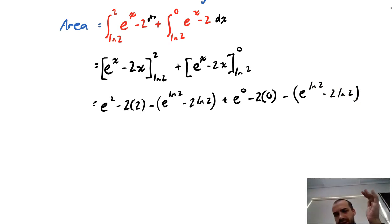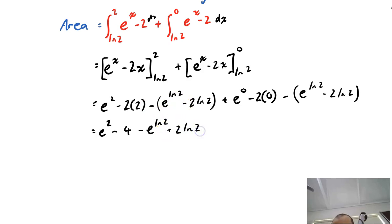Alright, now you could have done this with absolute values, but if you'd done that, you'd miss out on some opportunities to do some cancelling, which is really the key option here. So let's take a look at what we have. e to the 2 minus 4 minus e to the ln2 plus 2 ln2 plus e to the 0, which is just 1,